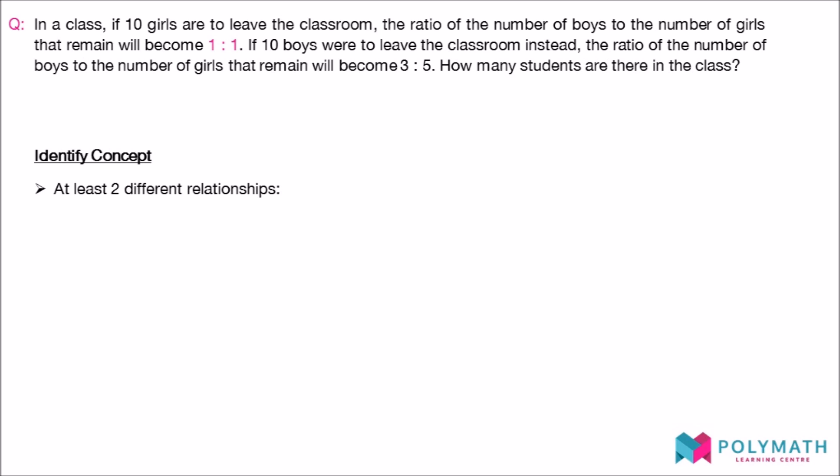In the question, the first relationship is that if 10 girls are to leave, the ratio of the boys to girls becomes 1 to 1. The second relationship is that if 10 boys left instead, the ratio of boys to girls becomes 3 to 5. We shall then express these two relationships as ratios.